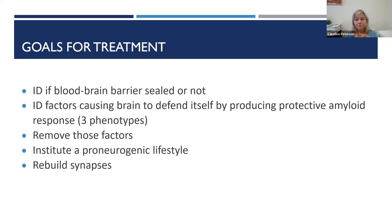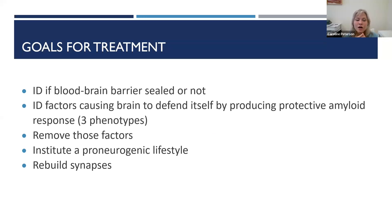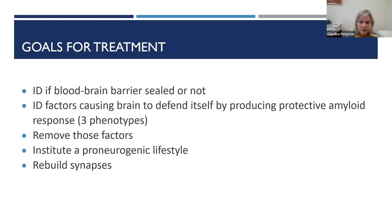So again, our goals are to identify if the blood-brain barrier is sealed. If it is not, then we'll seal it up. Then we want to see what factors, what systems are involved for you in cognitive decline, identify what those are, and then make a treatment plan. If there's something in the toxin range, the infectious range, or the food range, then we want to take those things out.